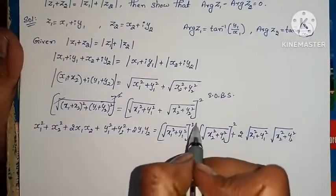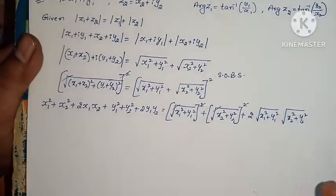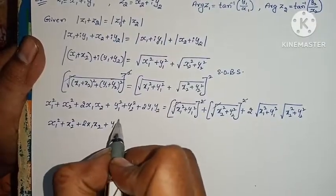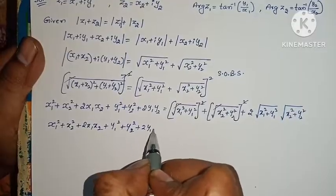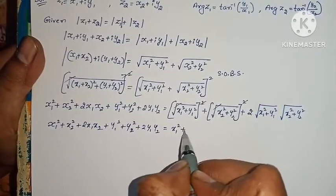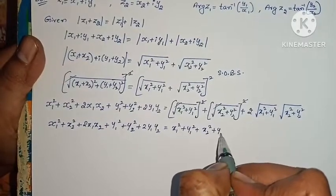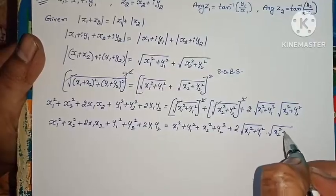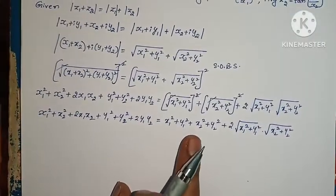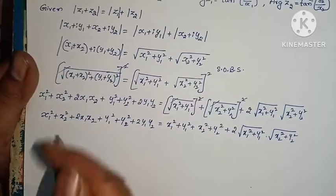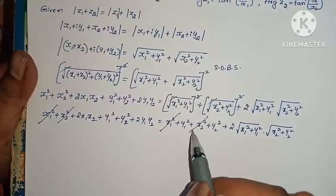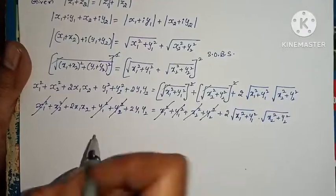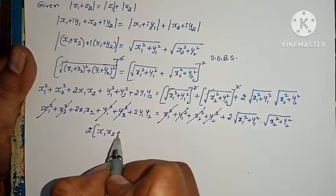On the right side, applying (a+b)² where a = root(X1²+Y1²) and b = root(X2²+Y2²): we get X1²+Y1² plus X2²+Y2² plus 2 times root(X1²+Y1²) times root(X2²+Y2²). Now the common terms X1², X2², Y1², Y2² cancel from both sides. So we get 2X1X2 plus 2Y1Y2.